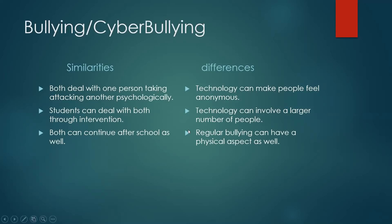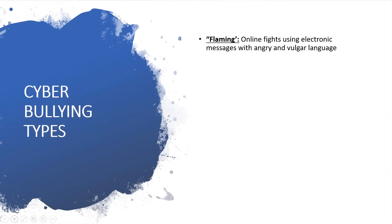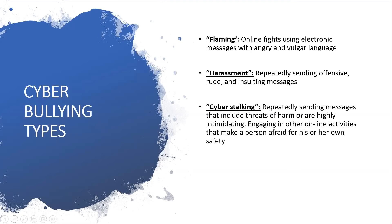Now we'll move into the types of cyberbullying. There's flaming — online posts using electronic messages with angry and vulgar language. There can be harassment — repeatedly sending offensive, rude, and insulting messages. There's cyberstalking — repeatedly sending messages that include threats of harm or are highly intimidating, engaging in online activities that make a person afraid for their safety. There can also be a sexual connotation to cyberstalking, so thinking about sexual safety is important.